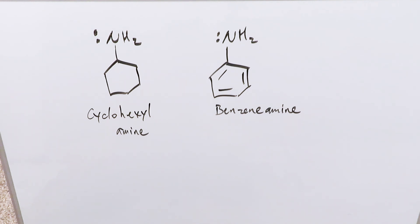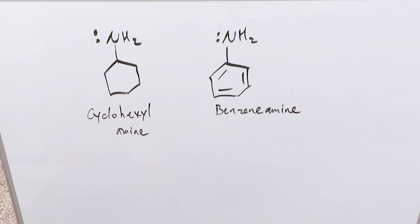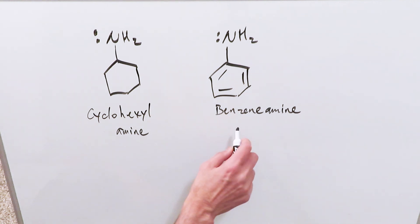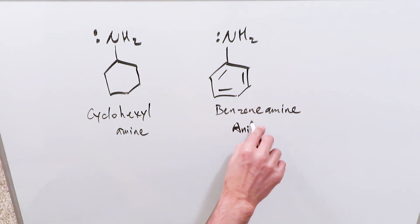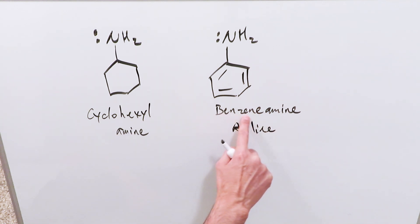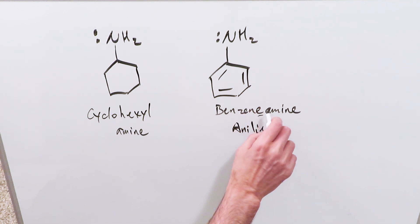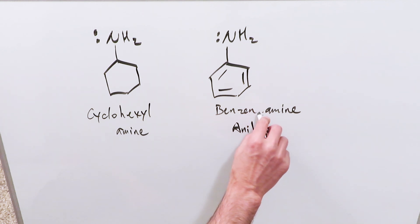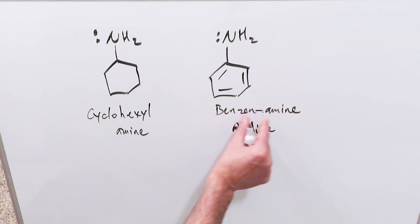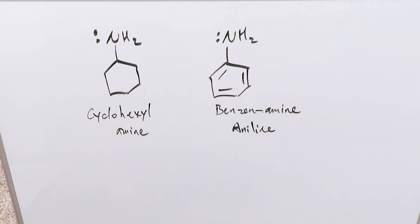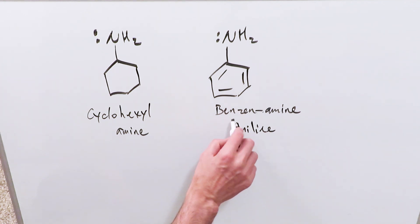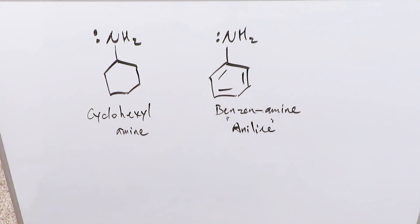Thank you for joining me. I am Strish. We're looking here at the comparison of these two compounds: which one is more basic — cyclohexylamine and benzeneamine, also called aniline. You can write it out as A-N-I-L-I-N-E. The 'e' at the end is optional depending on the book, but it's also called aniline. Which of these two is more basic?